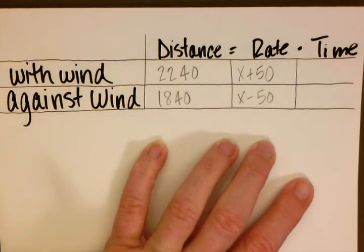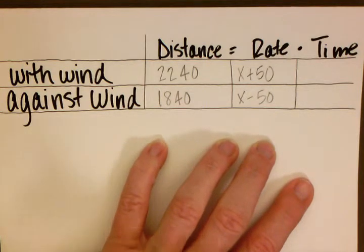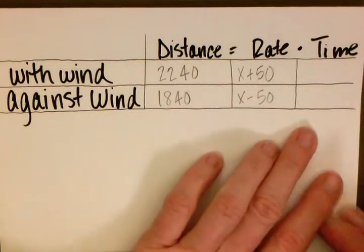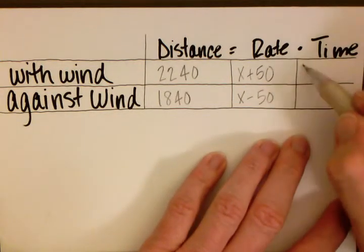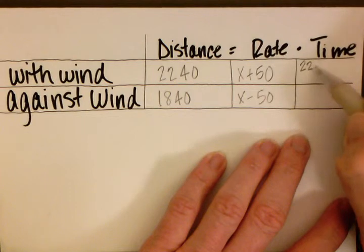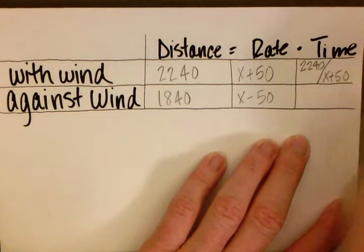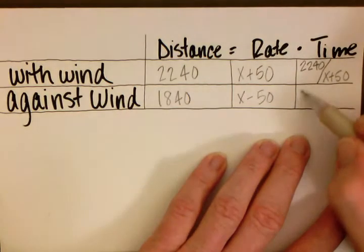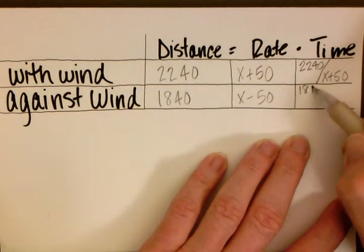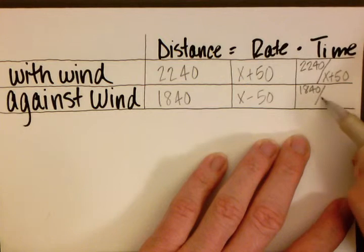Because this is a distance equals rate times time problem, we know that time equals distance divided by rate. So the time with the wind is 2,240 divided by x plus 50, and the time against the wind is 1,840 divided by x minus 50.